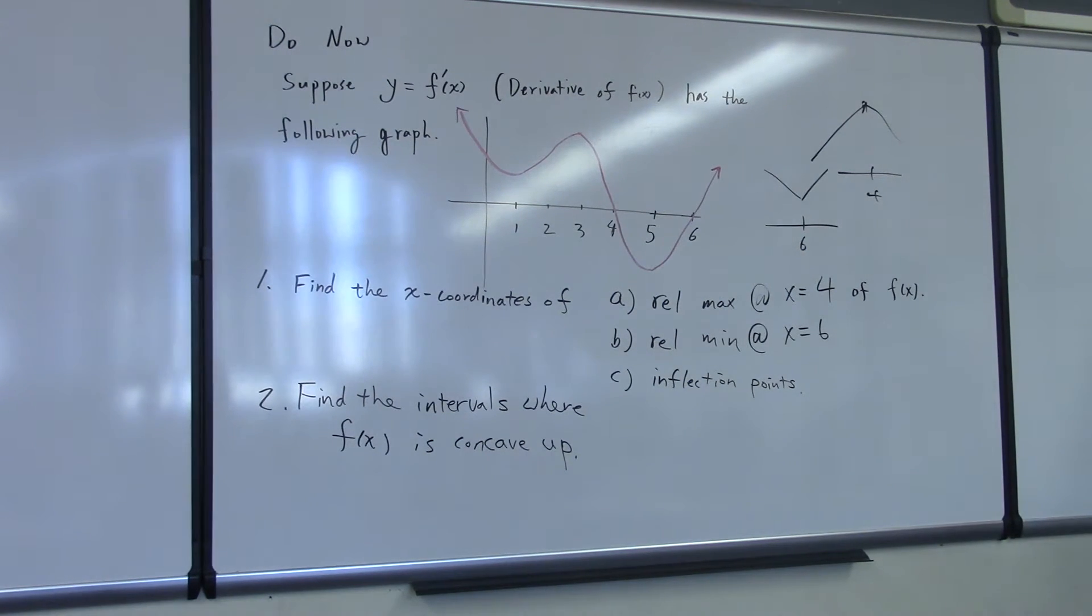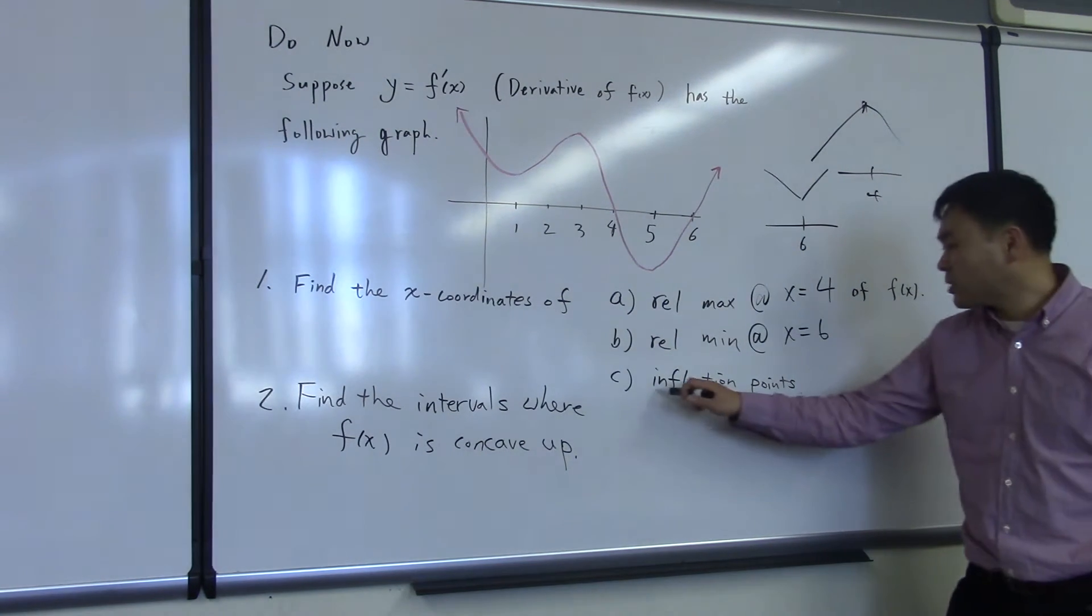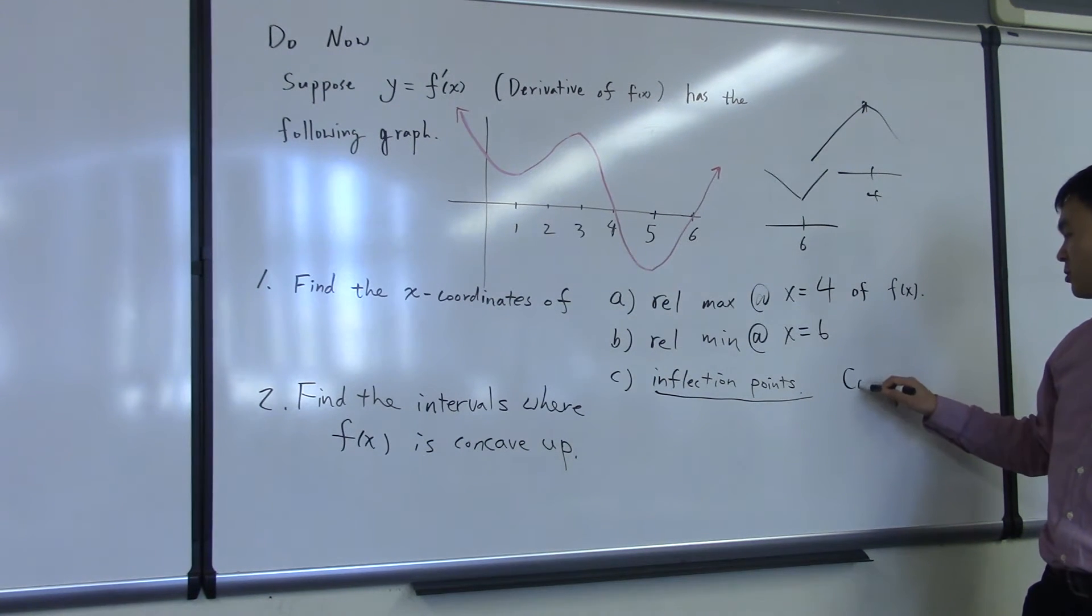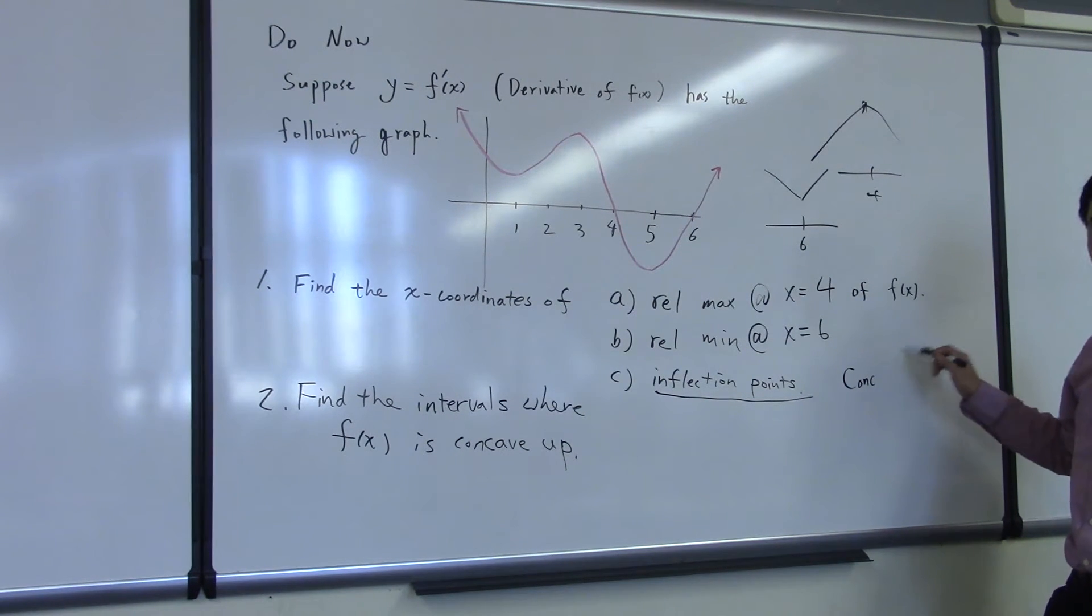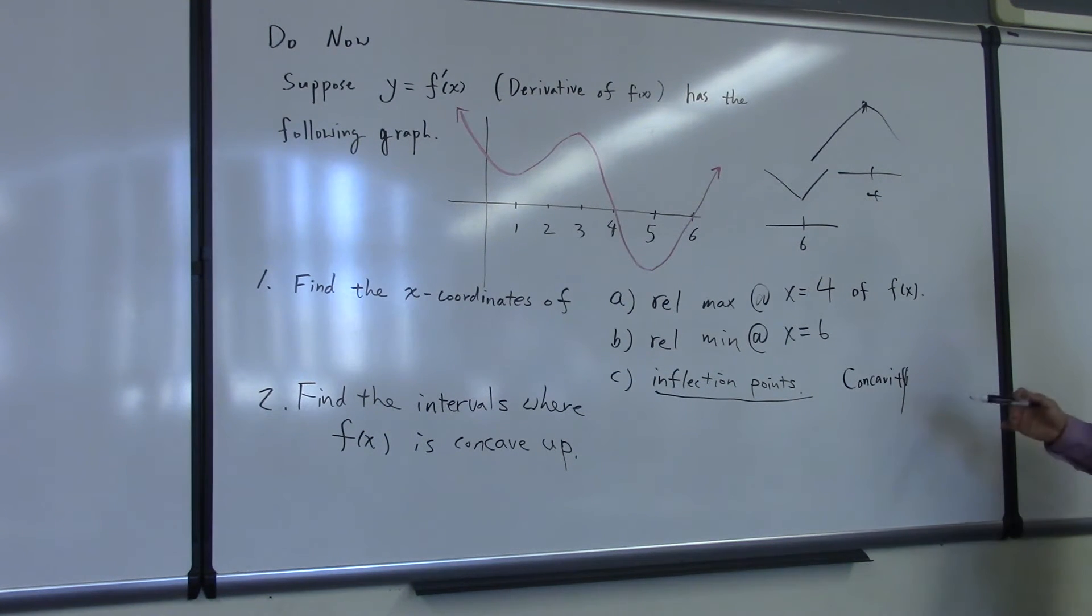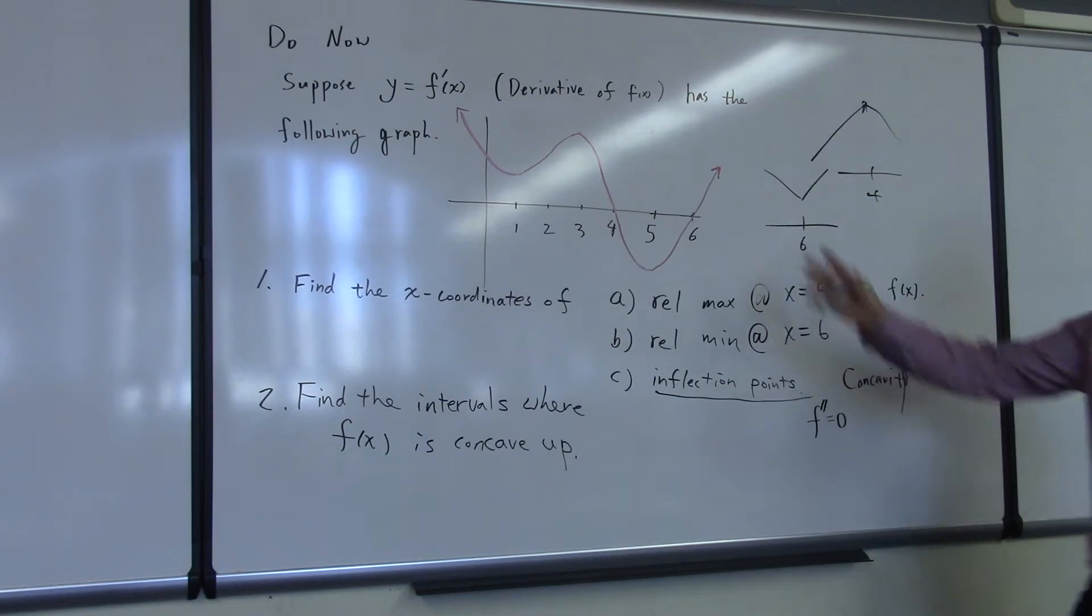What about the inflection points? Inflection points are points where the concavity changes, right? You go from concavity up to down, it has to do with concavity. And if f double prime does exist at the inflection point, f double prime has to be 0. f double prime has to be 0 at inflection points if it's differentiable everywhere.